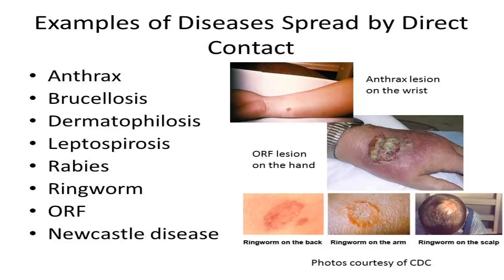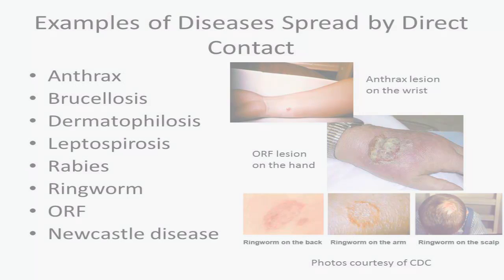Pictured are a blister on a person's arm due to an anthrax infection, an ORF infection on a person's hand, and ringworm infections on a person's back, arm, and scalp.